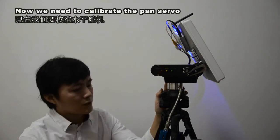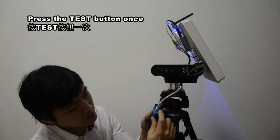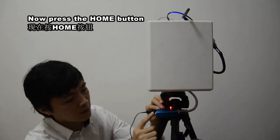Now, we need to calibrate the pan servo. Press the test button once. Now, press the home button.